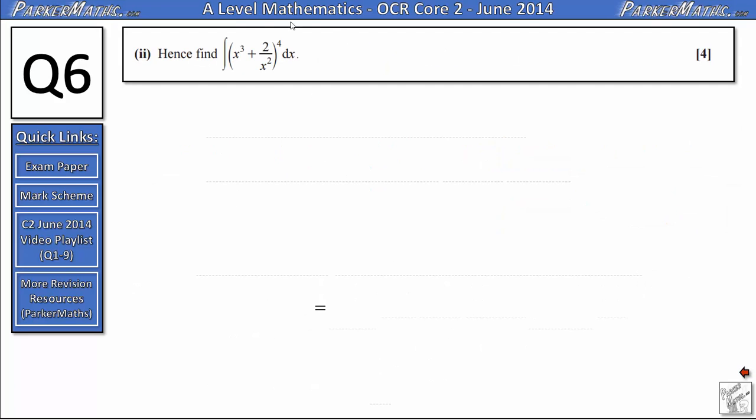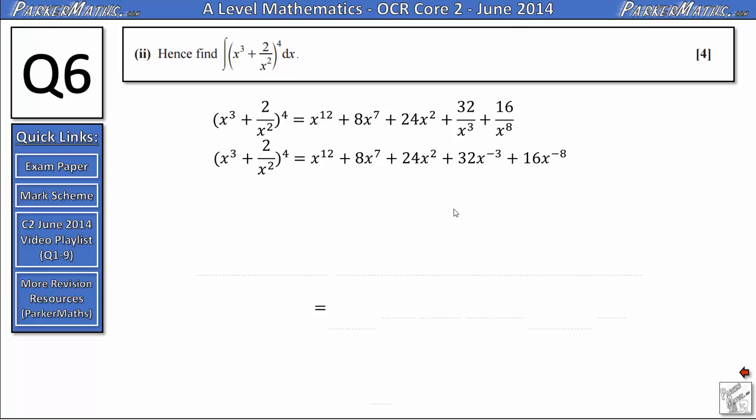In part 2 we need to integrate the function x cubed plus 2 over x squared to the power of 4. Well we'll use the binomial expansion we've just found. And instead of integrating this we'll integrate the powers here. But in order to integrate these last two terms it's probably going to be easier to write them as negative powers. So this becomes 32x to the negative 3 and this becomes 16x to the negative 8.